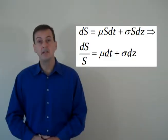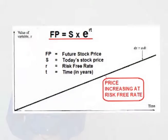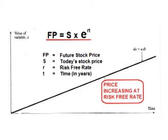Distributing the S to the other side of the equation gives us: future price equals today's price times continuous growth over a certain length of time that equals the rate of a government bond, plus the volatility of people randomly buying and selling the stock over time. So looking at a chart, let's say you could remove the volatility completely — in other words, if you could remove all uncertainty — price would then simply increase or drift up at a constant rate.